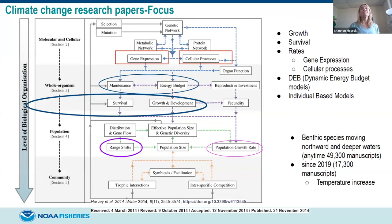In the last decade, as gene expression work has become more cost-effective and more organisms have known genomes, there's been growing interest in how genes are expressed — up-regulated or down-regulated — and what cellular processes are occurring, and whether we can start to see gene expression changing because of ocean acidification or environmental change.